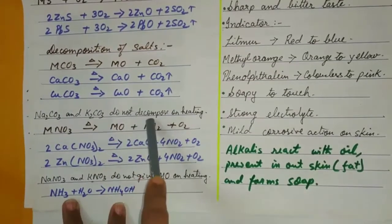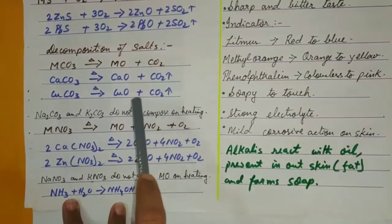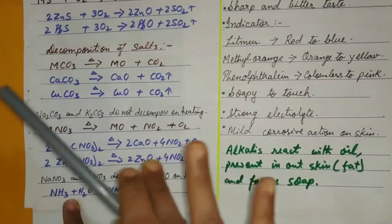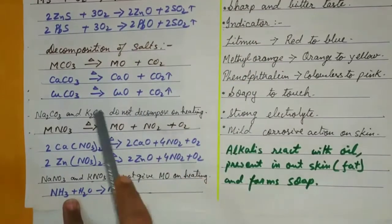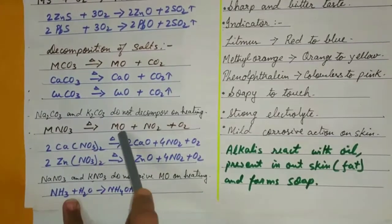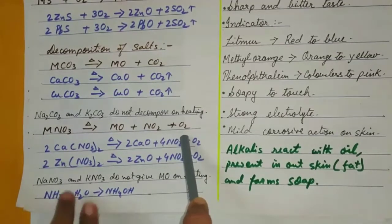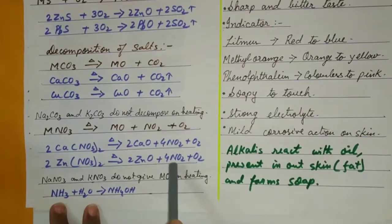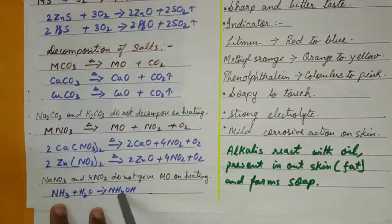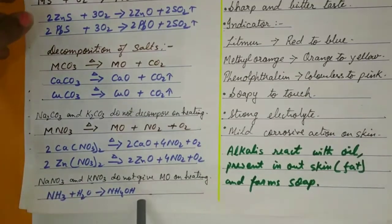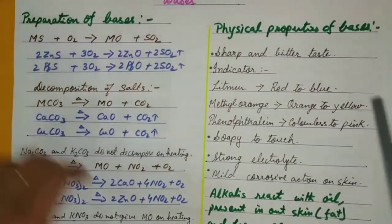Sodium nitrate and potassium nitrate do not decompose on heating. Metal nitrate gives metal oxide, nitrogen dioxide, and oxygen — but sodium nitrate and potassium nitrate give sodium nitrite and oxygen, with no nitrogen dioxide released. The preparation of ammonium hydroxide is a combination reaction: ammonia and water combine to give ammonium hydroxide — a very common reaction also seen when teaching sublimation.